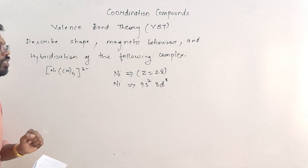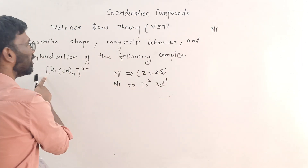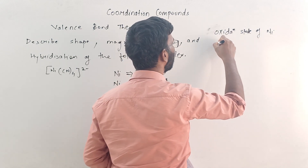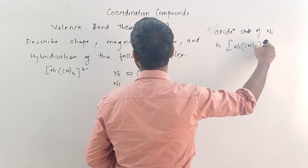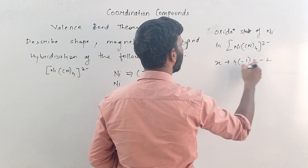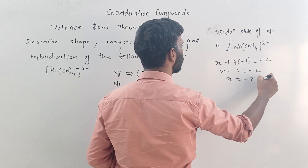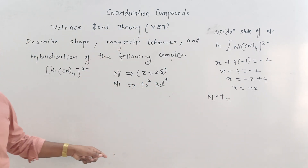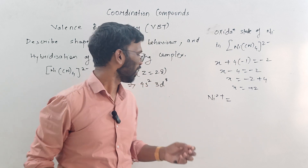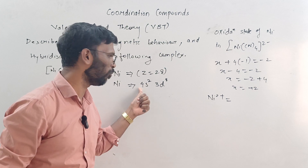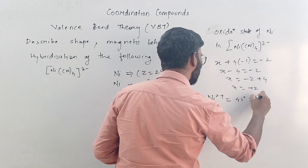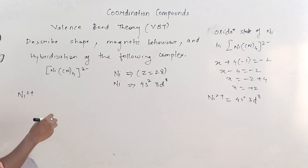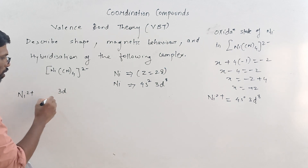Now, what is the oxidation state of nickel in this complex? For [Ni(CN)4]²⁻, we write x + 4×(−1) = −2, so x − 4 = −2, therefore x = +2. Nickel is in the +2 oxidation state. Since 4S is the outermost shell, we remove electrons from there first, giving Ni²⁺ the configuration 4S0, 3D8.